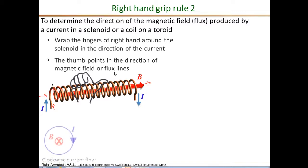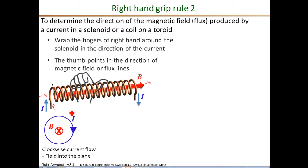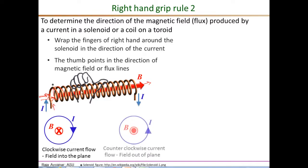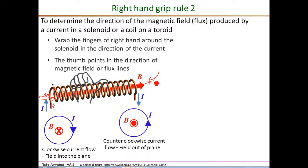We can also get the same information by applying the concept from the previous slide. Viewed from the left end, what we see is a current flowing in the clockwise direction, so the B field should be entering the plane as indicated by a cross — therefore the B field direction is left to right. Similarly, viewing the solenoid from the right end, what we see is a current in the counter-clockwise direction, so the B field should be coming out of the plane as indicated by a dot, which is confirmed by the right hand grip rule used earlier.